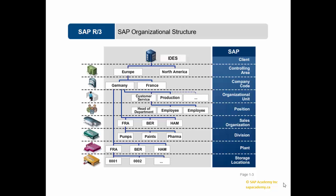Storage location: The storage location is an organizational unit which differentiates between different material stock in a plant. It is a place where stock is kept physically. A plant can consist of multiple storage locations, and all the data is stored at the storage location level for a particular storage location.